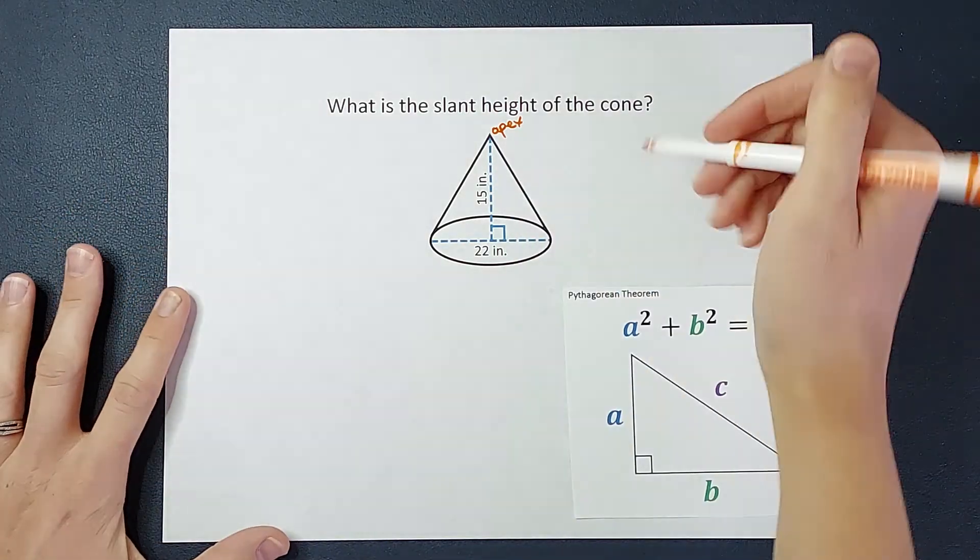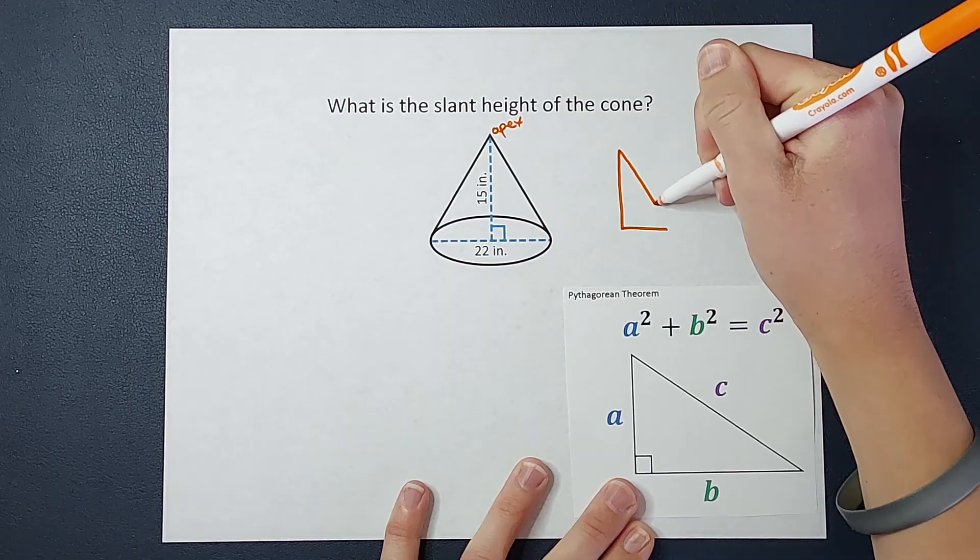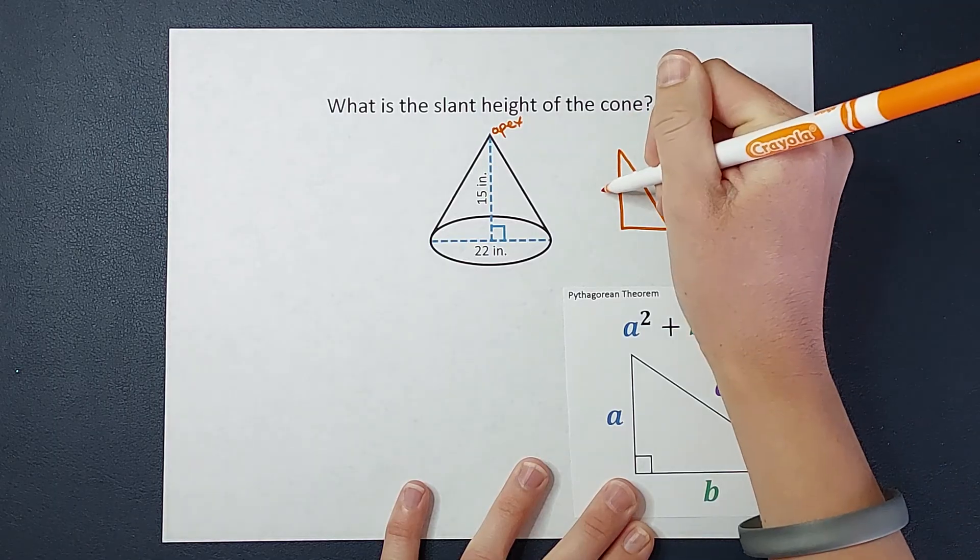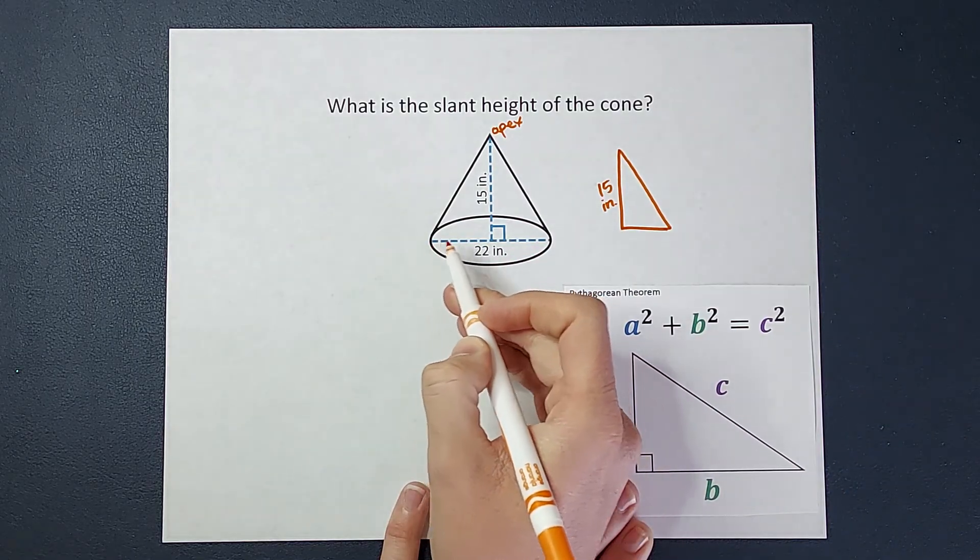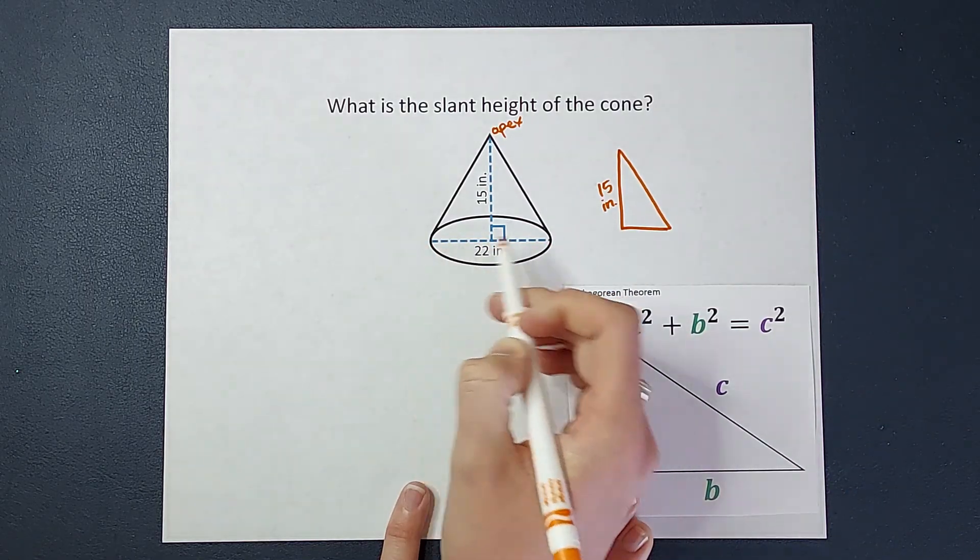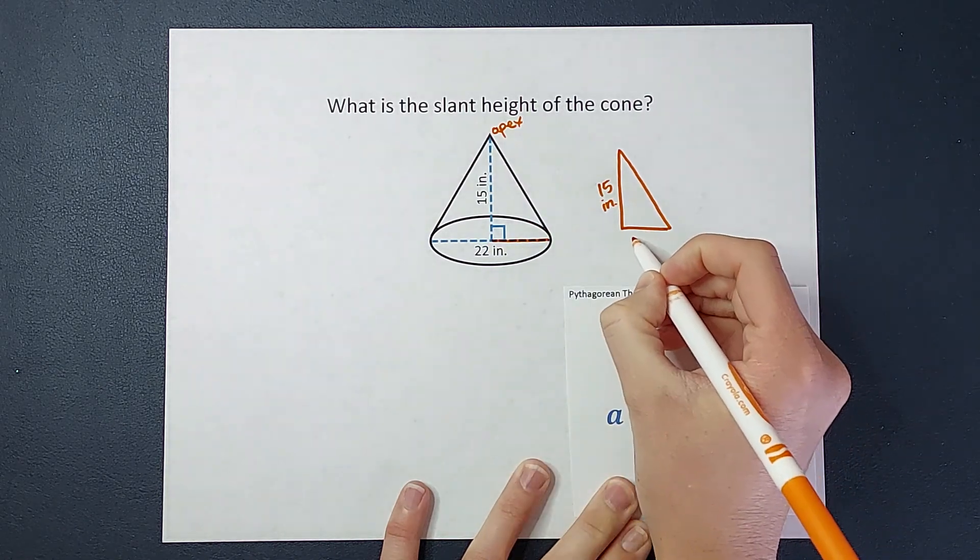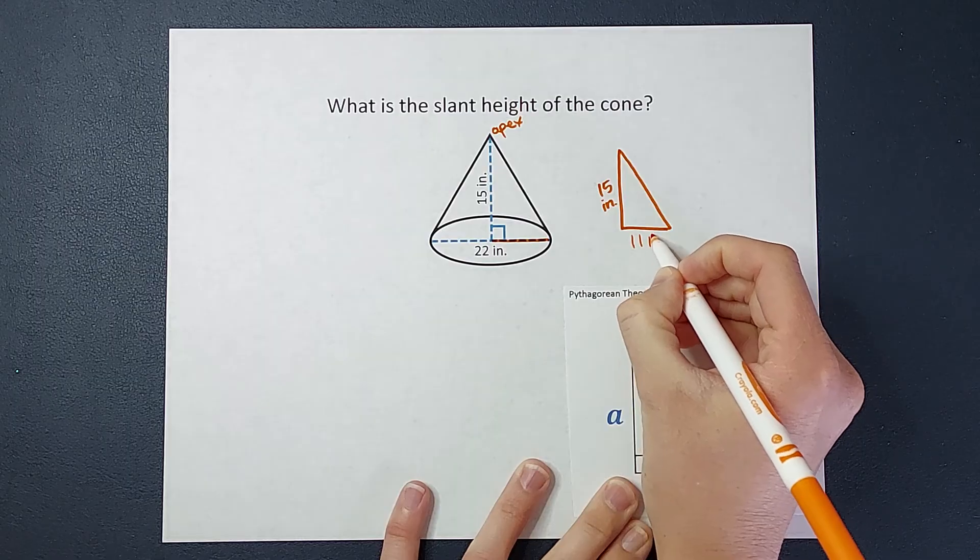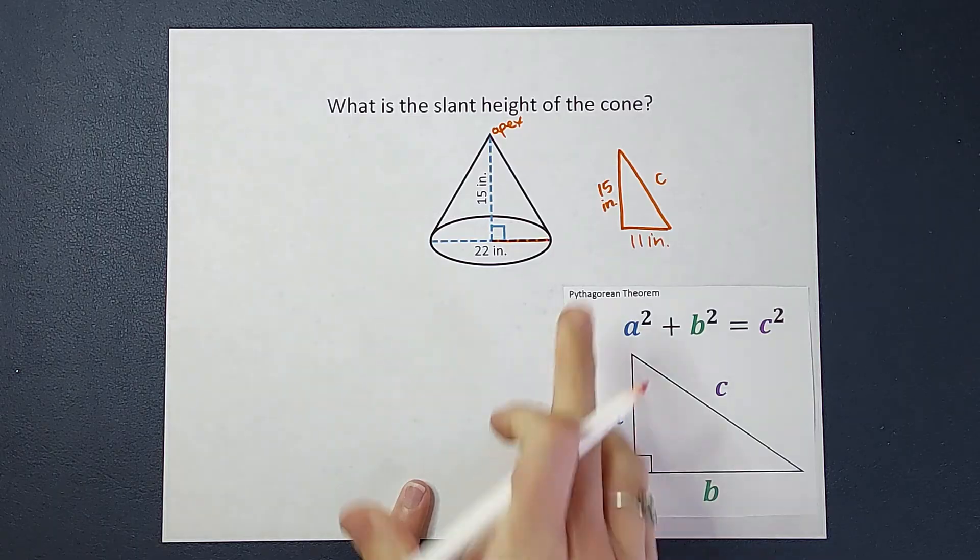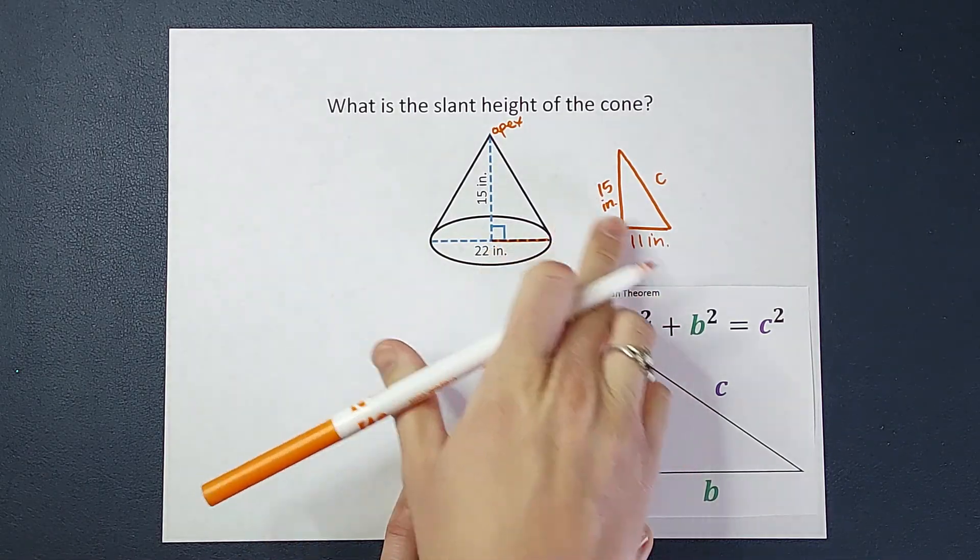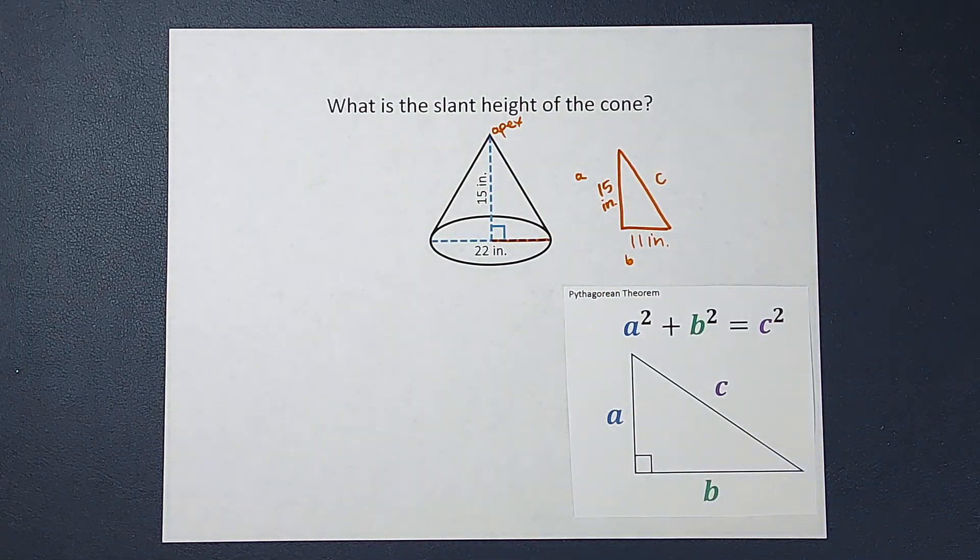So I have, let's draw this over here, my triangle. I know this tall leg is 15 inches, and this bottom one is not 22. The entire length is 22. So just this section is half of it, which is going to be 11. 22 divided by 2 is 11. And then this is what I don't know, we're going to call it c. Now, either one can be a and b of the legs, it doesn't matter. We'll just label this one a and this one b.